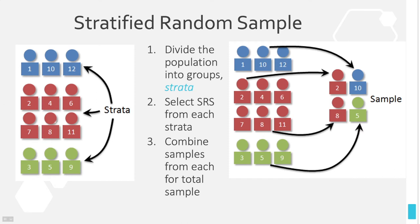You're going to choose proportionally from each category — that's the correct way to do it. Sometimes the textbook will choose an equal number from each category, but to use this method correctly and to its full advantage, you should really choose proportionally. So if a category has twice as much in the population, it should have twice as many in the sample as well. That's the true advantage of stratified sampling — you can make sure every category is neither underrepresented nor overrepresented.